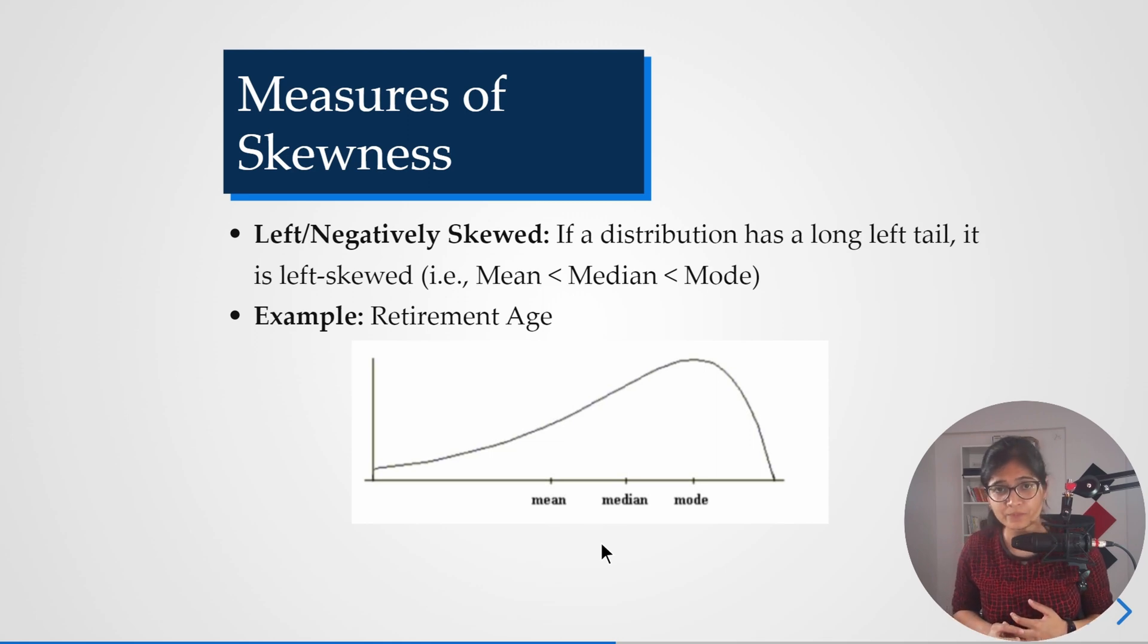Apart from that, I can say maybe human life cycle is an example of a left negatively skewed. Why? Because you will observe that those people who are having a lower age, the chances are very low that they are going to die.